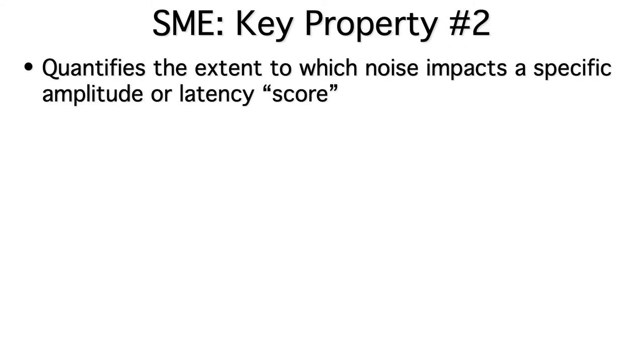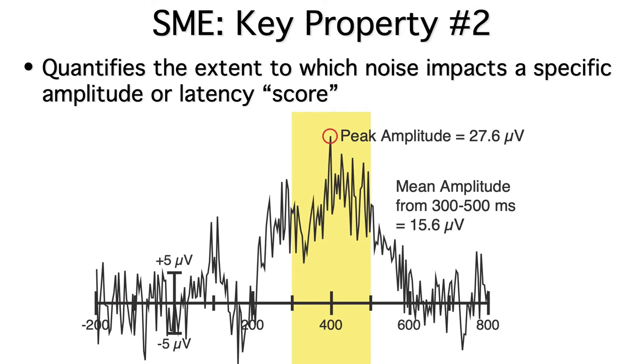Second, the SME quantifies the extent to which noise impacts the specific amplitude or latency score that you're going to put into your statistical analysis. For example, you'd get a different SME for peak amplitude than for mean amplitude. And that makes sense, because high-frequency noise has a much larger impact on peak amplitude than on mean amplitude.